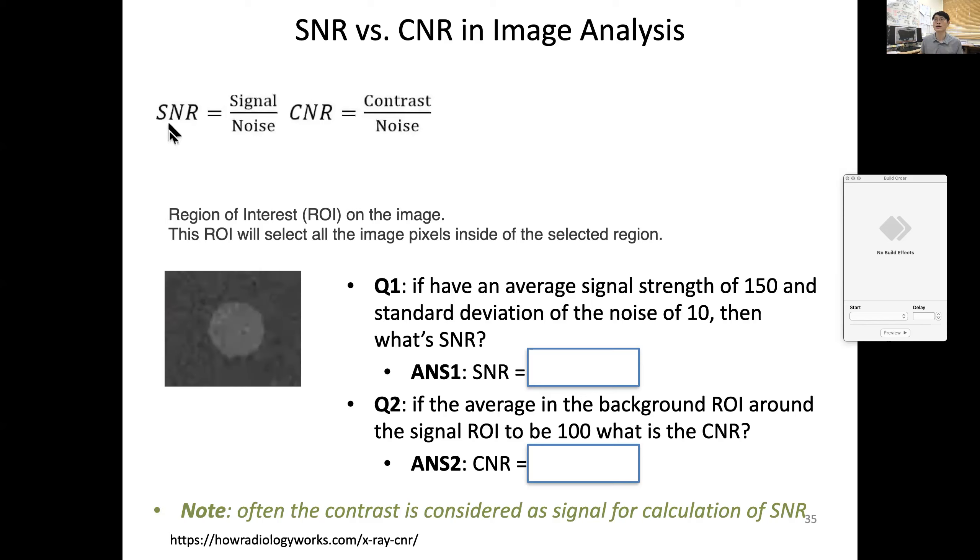Simply, SNR versus CNR is signal divided by noise or contrast divided by noise. What do I mean by signal and noise? When there's an image, you have a region of interest in the signal. The average pixel and the standard background of the region of interest—that's SNR.